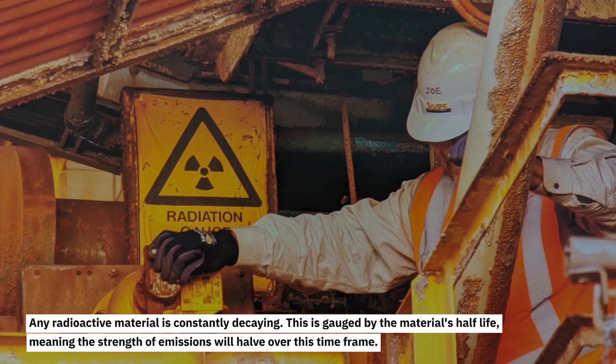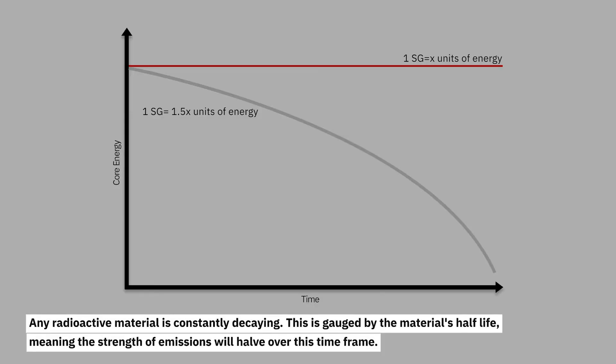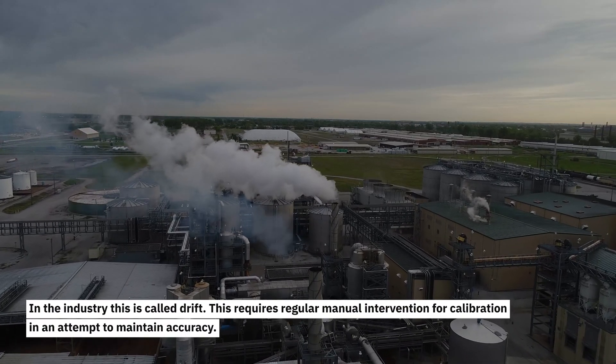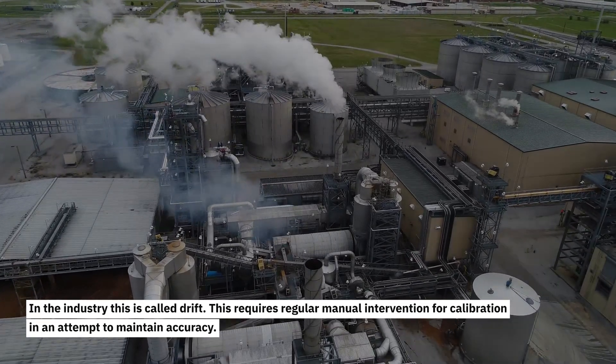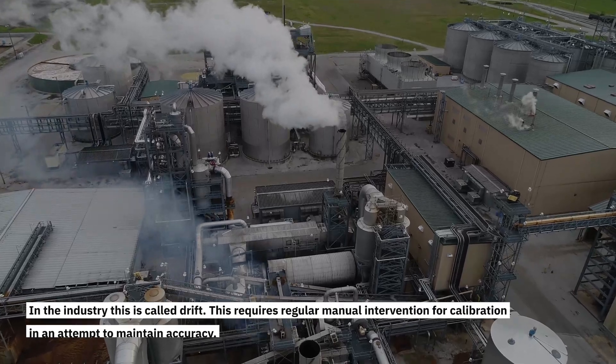Any radioactive material is constantly decaying. This is gauged by the material's half-life, meaning the strength of the emissions will halve over this timeframe. In the industry, this is called drift. This requires regular manual intervention for calibration and an attempt to maintain accuracy.